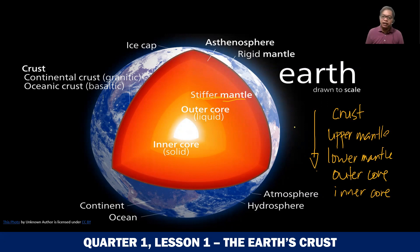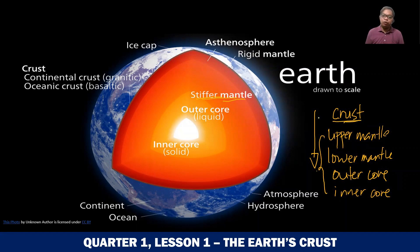Ibig sabihin, mas umiinit. And the pressure also increases. Ibig sabihin, mas tumitindi yung pressure o yung pagkakasiksikan ng mga matter doon sa loob. So we're not gonna be talking much about these four layers. We're gonna be focusing on the first or the outermost layer, which is the crust.